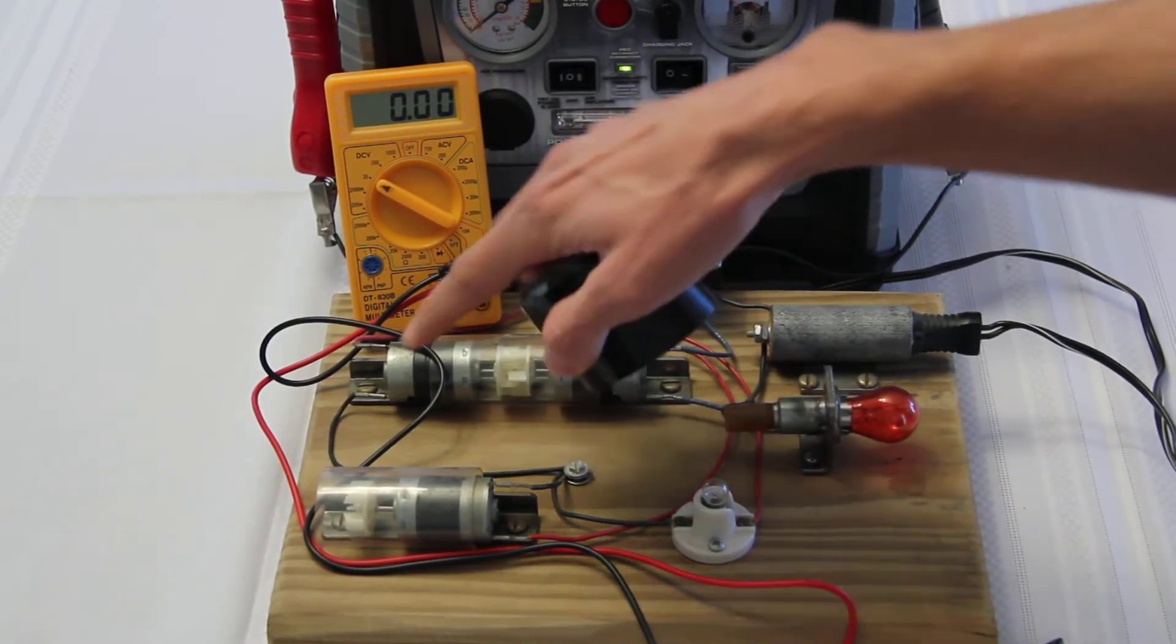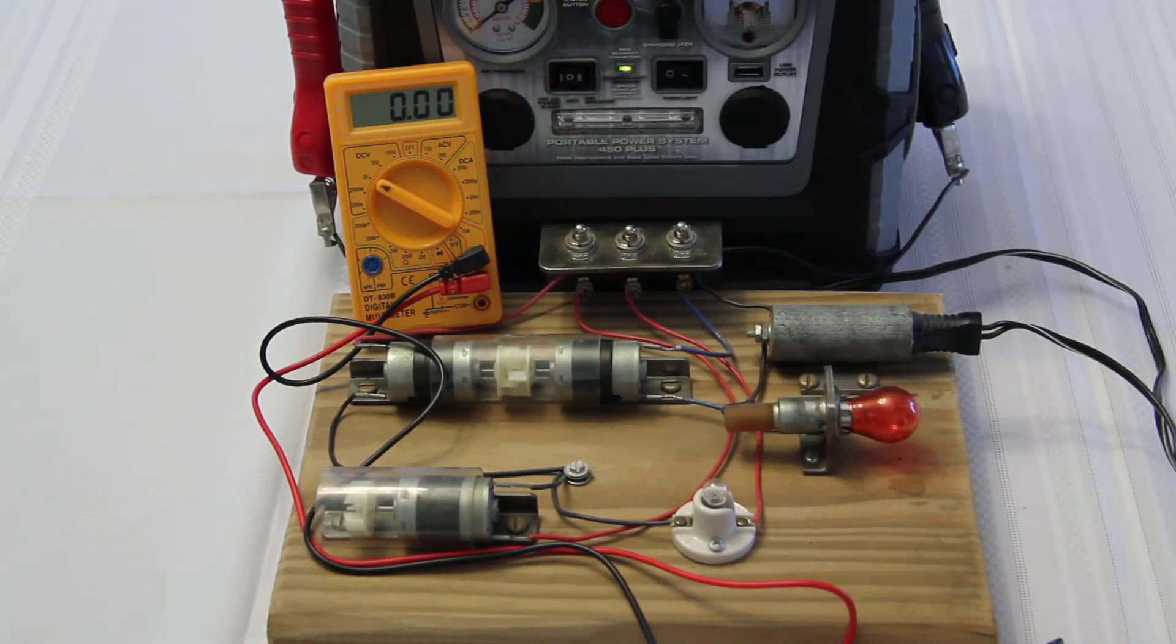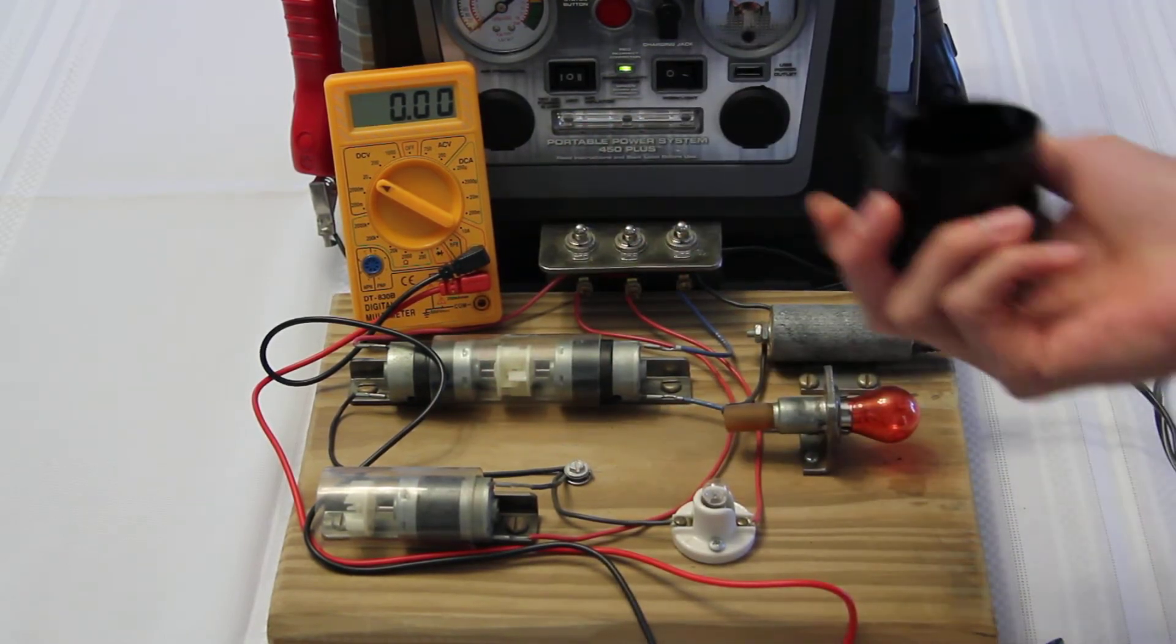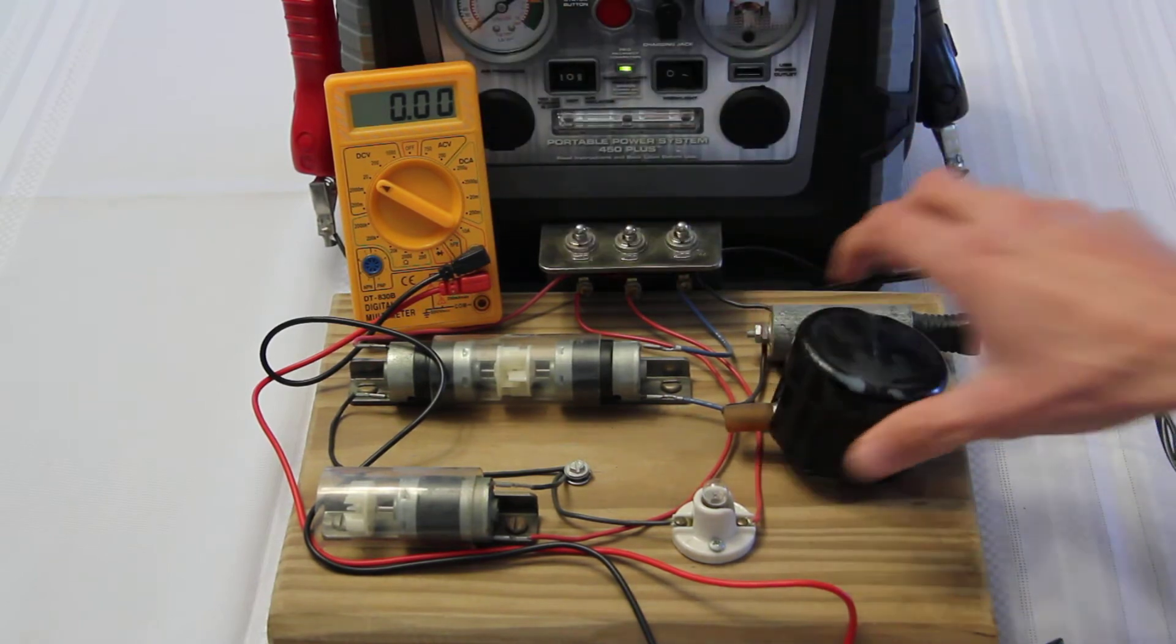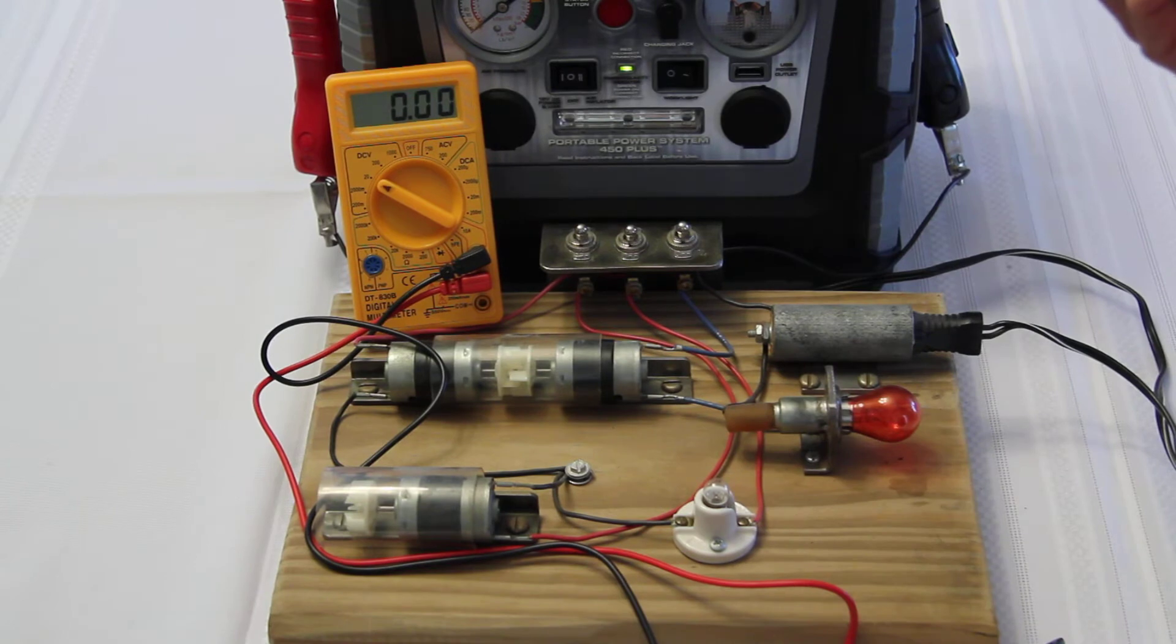This motor turns through this coupling here and turns this motor, which then generates electricity which is used by either this motor or this light bulb through these two switches. So really doesn't do anything, and all this does is cover up the light bulb because that's not actually part of the project. It's just a cheap way to make a resistor, or an easy way.